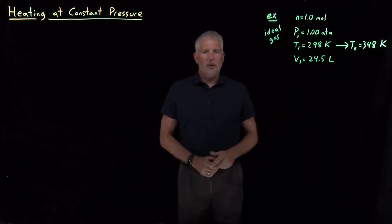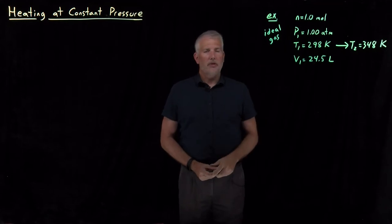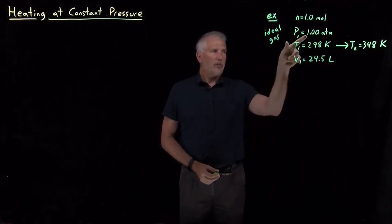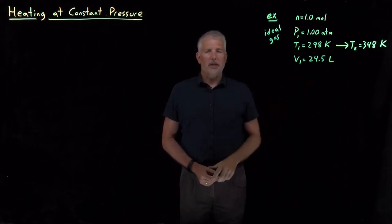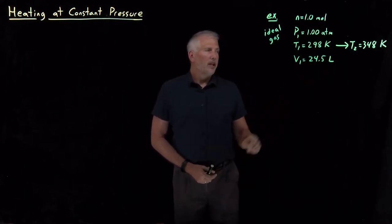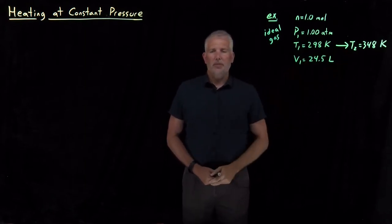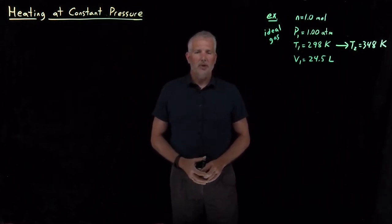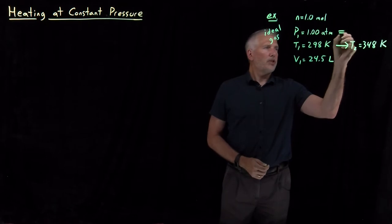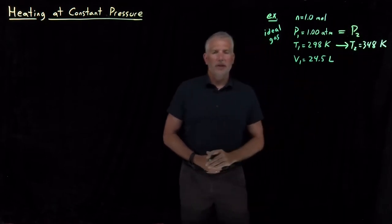Consider exactly the same problem as before. We've got one mole of an ideal gas initially at a pressure of one atmosphere and a temperature of 298 Kelvin, which makes it occupy 24.5 liters. Once again we're going to increase the temperature by 50 Kelvin, but now we're going to do it isobarically at constant pressure, so initial pressure and final pressure are going to be the same value.